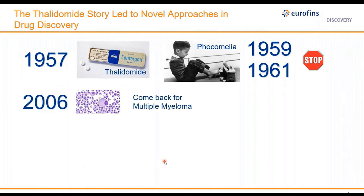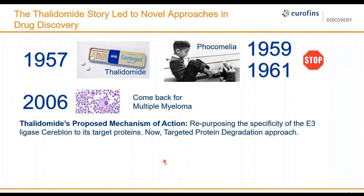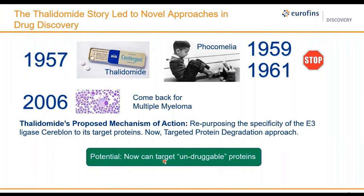In 2006, thalidomide made a comeback as a combination drug for the treatment of multiple myeloma, thanks to work from Celgene and other companies. Still, during that time, the precise mechanism of action for thalidomide was not known, even with over 2,000 research publications on it. Only in 2012, studies started to emerge showing that thalidomide's target is the E3 ligase cereblon. It is now well accepted that thalidomide repurposes the specificity of the E3 ligase cereblon to its target proteins. These findings led to the question: can we make more drugs like thalidomide that will retarget the specificity of an E3 ligase to a target of interest and degrade it? The potential is huge — this means we can now target previously thought undruggable proteins, such as transcription factors, scaffold proteins, and other non-enzymatic proteins.